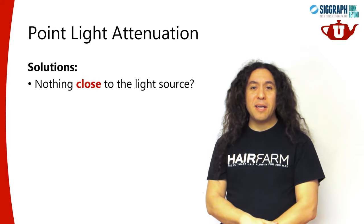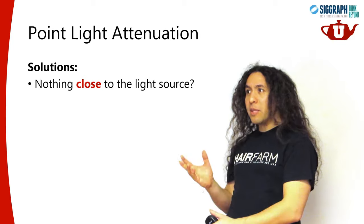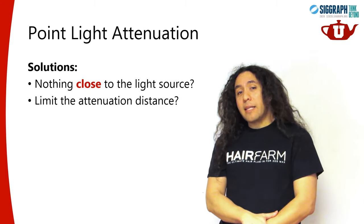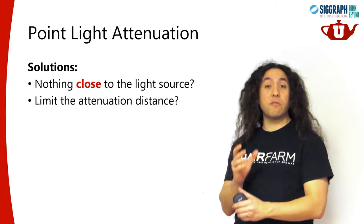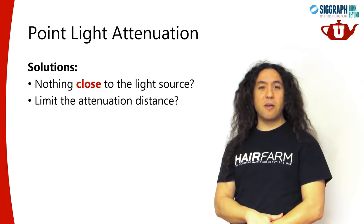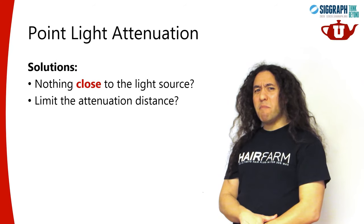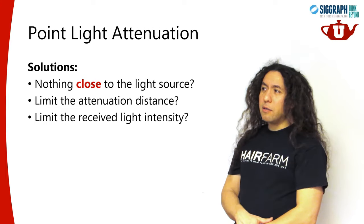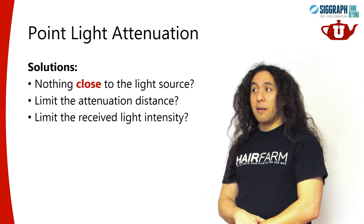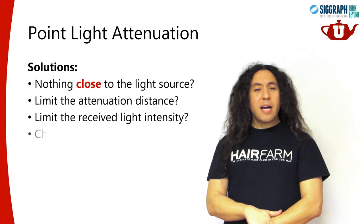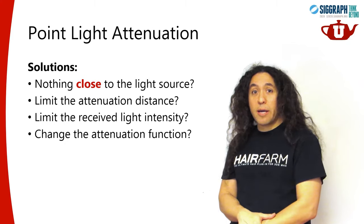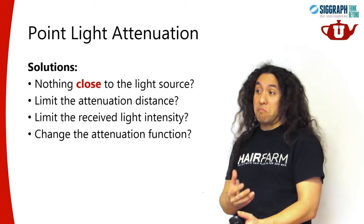In some cases we can't quite do that. For example, for virtual point lights, we need to put them on top of surfaces, so they're going to be, by definition, close to the surfaces. Can we just limit the distance value we use for computing the attenuation function? We can do that, but again, what is that limit? It's not very well defined. If we can't limit that, can we limit the maximum illumination we get from the light source? We run into a similar problem - it's the same thing as defining a limit for the distance, and what that would be is unclear. A common solution is just modifying the attenuation function, but then we know that the inverse square attenuation is the correct function for a point light, so whatever else we do is going to be incorrect.